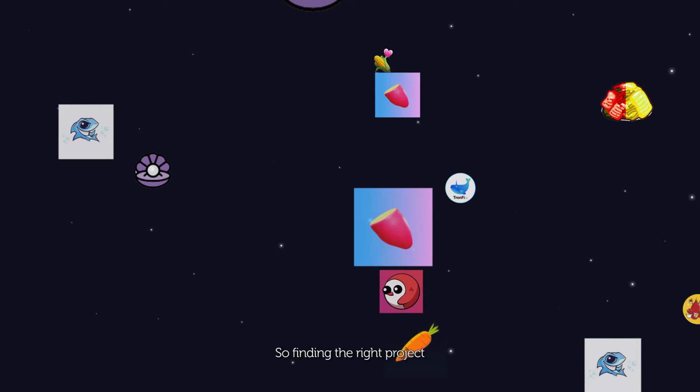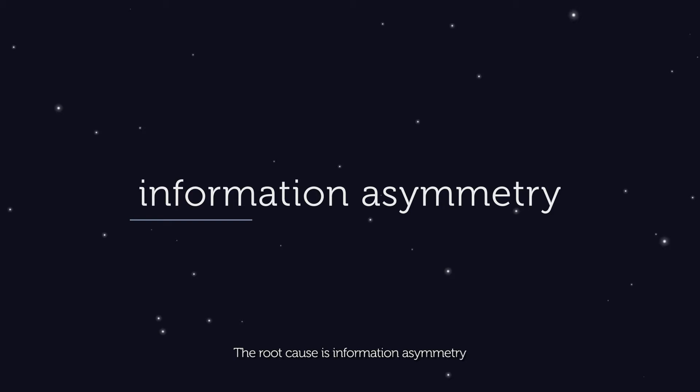Explosive growth can generate a lot of junk, so finding the right project can be like finding a needle in a haystack. The root cause is information asymmetry.